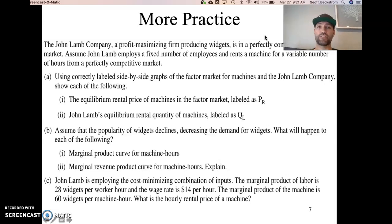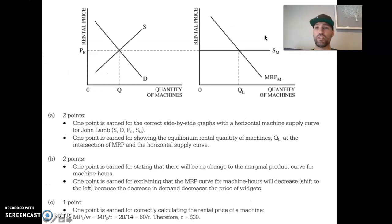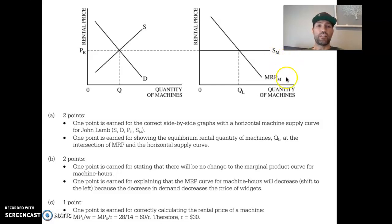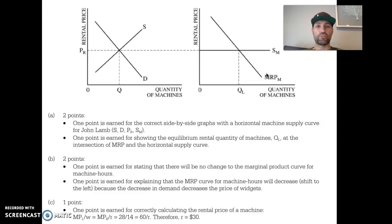Now let's look at the scoring guide for the John Lamb problem. For part A, you'll see a market graph on the left — a regular supply and demand graph with the price set by the market. That price translates over to John Lamb, who has a perfectly elastic supply for machine hours, indicating John Lamb is a price taker in the machine hours market. You'll also see the marginal revenue product of machines falling because machine hours experience diminishing marginal returns. Set your graph up like that to earn those two points.